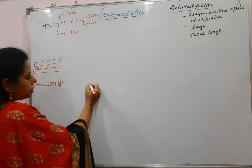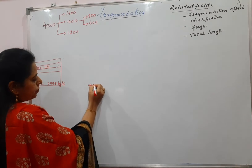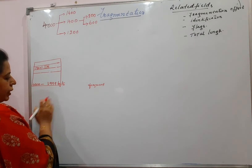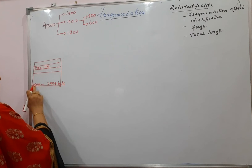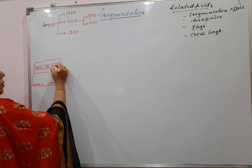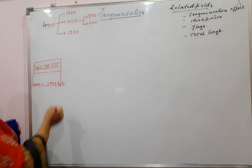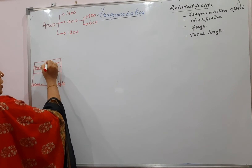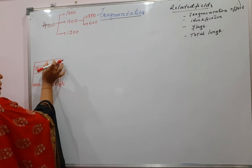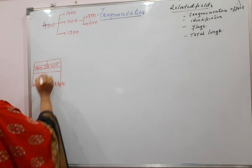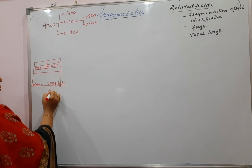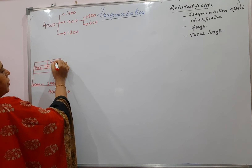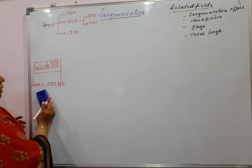Offset value is always the position of the fragment. Presently this original datagram is not fragmented, so it starts from 0. The fragmentation offset you can write as 0. And remember, you have to write down the total length also. Total length uses 16 bits. Presently the size of the data is 4000, and you have 20 bytes for the header. So 4020 will be the total length in the original datagram.